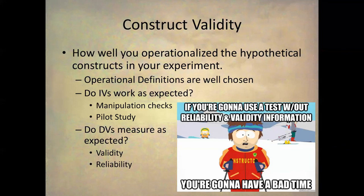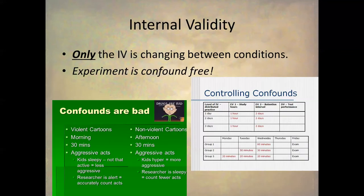When considering whether dependent variables are working as expected, we're talking about the elements of a good test: validity and reliability. You should always have good validity and good reliability data for tests and DV measures you're using. If you use a test without reliability and validity information, you're going to have a bad time. Internal validity means that the experiment is confound free — between the different levels of the IV, the only thing that changes is the independent variable, with no extraneous variables confounded with the levels of the IV.